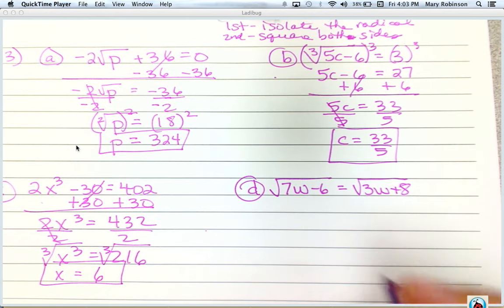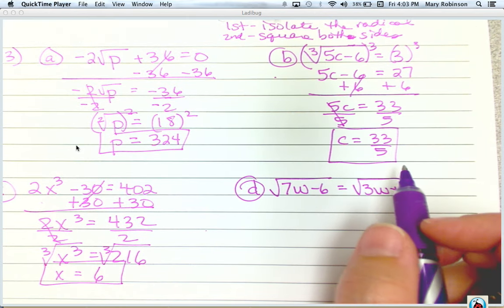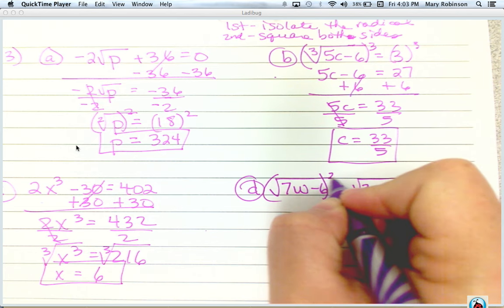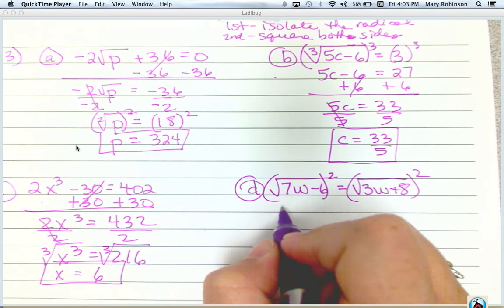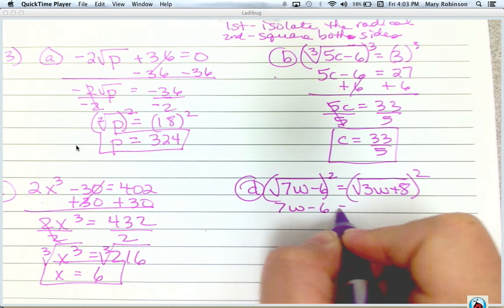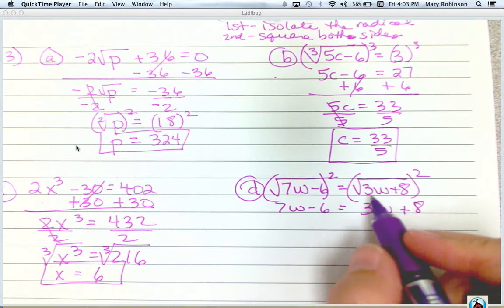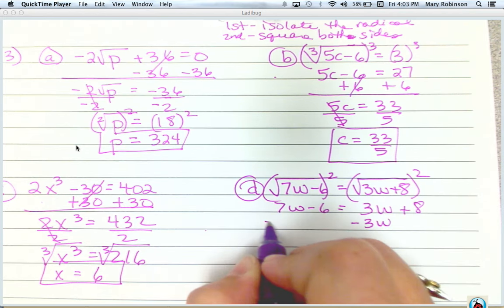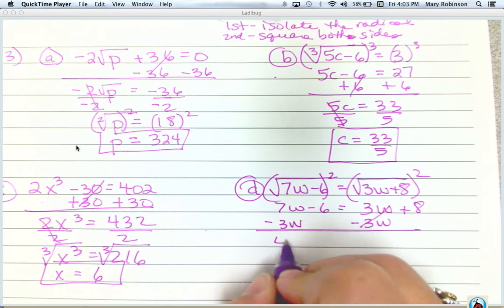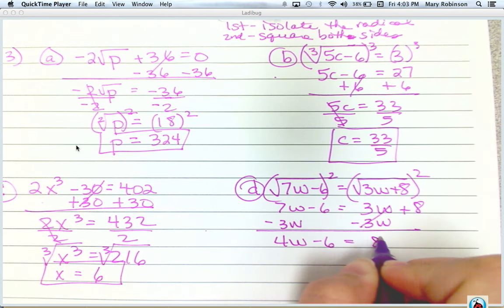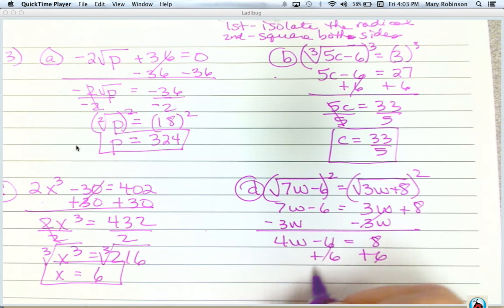Next, for D, we have a radical on both sides, so it's already isolated. Next, we square both sides. So we actually are going to get rid of it entirely, and it just becomes a linear equation to solve. So I'm going to subtract the smaller of the two variable terms and just solve it like normal.